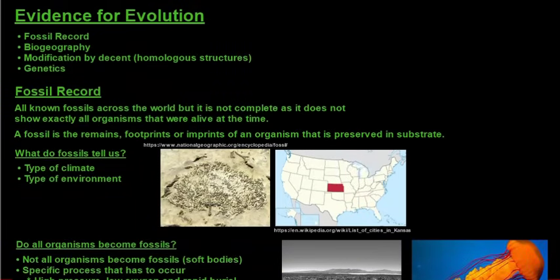What evidence for evolution do we have? The fossil record and biogeography you have done in grade 10, then we're looking at modification by descent, specifically homologous structures, and genetics. The fossil record is all known fossils across the world but is not complete as it does not show all organisms that were alive at the time. A fossil is the remains, footprints, or imprints of an organism preserved in substrate.